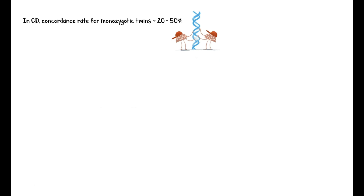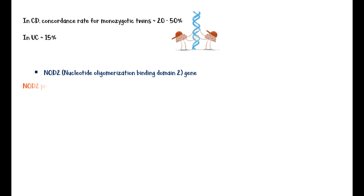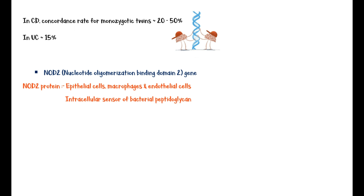In Crohn's disease, the concordance rate for monozygotic twins is about 20–50%, and in ulcerative colitis it is about 15%. The major gene associated with inflammatory bowel disease is the nucleotide oligomerization binding domain 2 gene. NOD2 protein is expressed in epithelial cells, macrophages, and endothelial cells, and acts as an intracellular sensor of bacterial peptidoglycan. In addition to NOD2, genes of the Th17 pathway and autophagy genes are also associated with the disease.